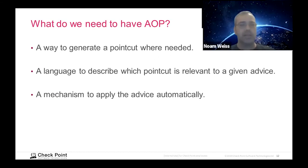So what do we need in order to have aspect-oriented programming? We need a way to generate pointcuts where they are needed. That's the first element. We need a language to describe which pointcuts are relevant to a given advice. And we need a mechanism to automatically associate the advice with the pointcut.